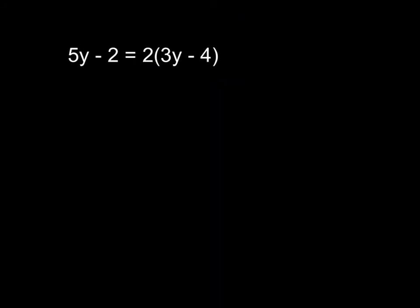In this next problem, we now have the distributive property that we need to perform first before getting our variable terms on one side and our constant terms on the other side. So the first thing we're going to do, just like we learned a couple lessons ago, is we are going to distribute the 2, multiply it, by both terms in the parentheses.